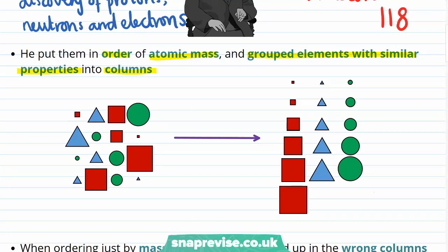We can see a representation of the ordering process taken place to form the first periodic table in this diagram, where the shapes on the left hand side represent the known elements. You can see on the right hand side that they've been ordered in increasing mass, represented here by the size, and that similar elements, which are represented here by the same shape, have been put into columns.